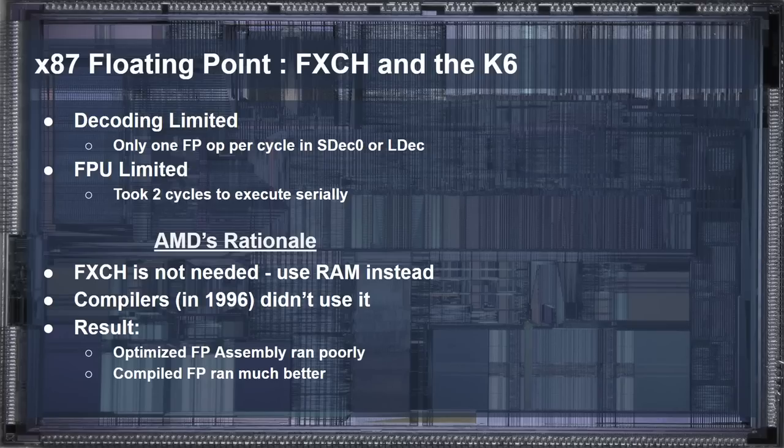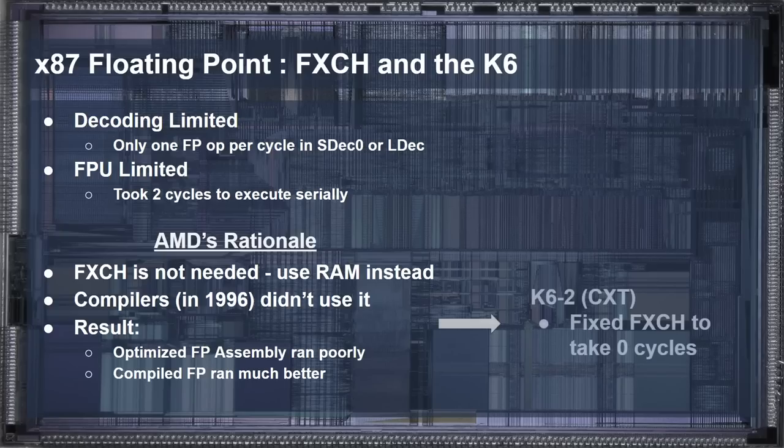AMD's rationale was that the f-exchange instruction wasn't really needed, and that their memory access was fast enough, so you should just use memory-direct operations instead. This was further compounded by the fact that most compilers around the time didn't use the f-exchange instruction that often, and it was only really used for hand-optimized assembly. Unfortunately, Quake made extensive use of hand-optimized assembly. AMD later corrected this mistake in their CXT revision, which moved the f-exchange instruction from taking two cycles to taking zero cycles. Either way, f-exchange alone wouldn't account for the entire performance difference, and it wasn't enough to boost performance on the Pentium to the required level.